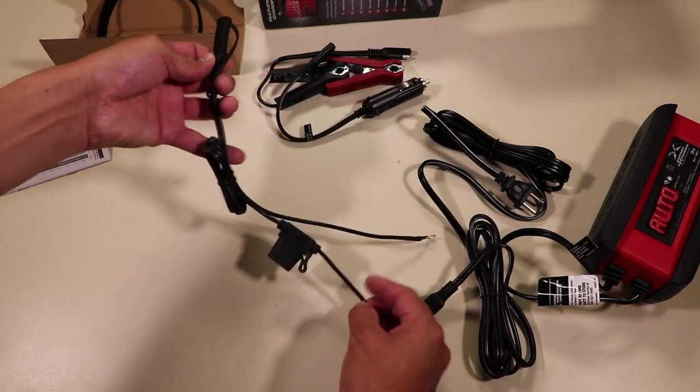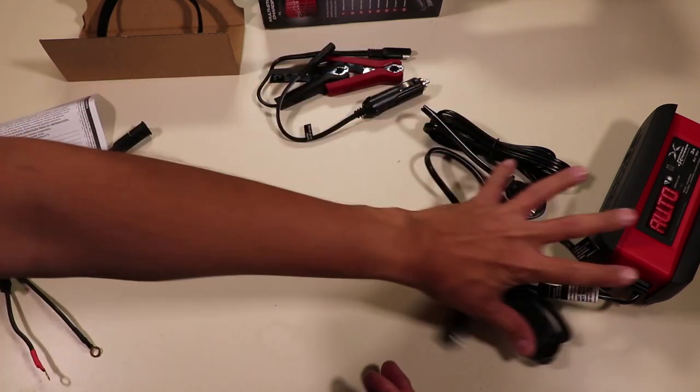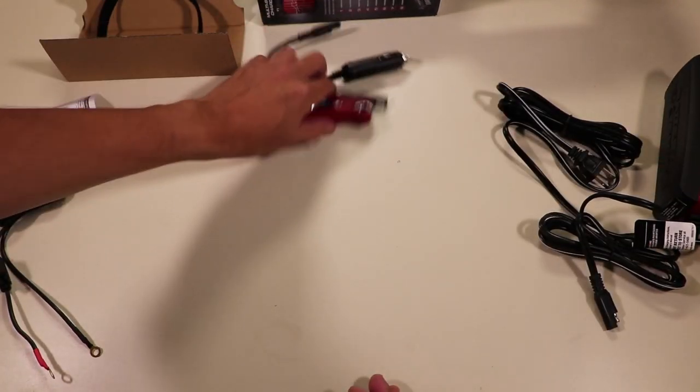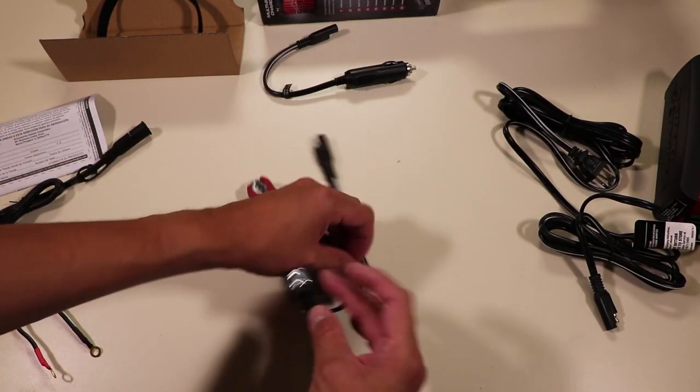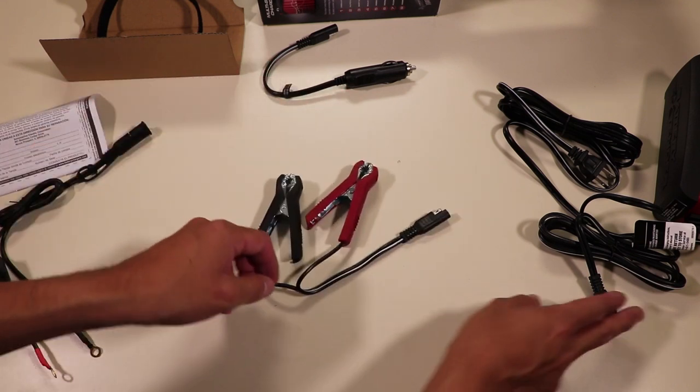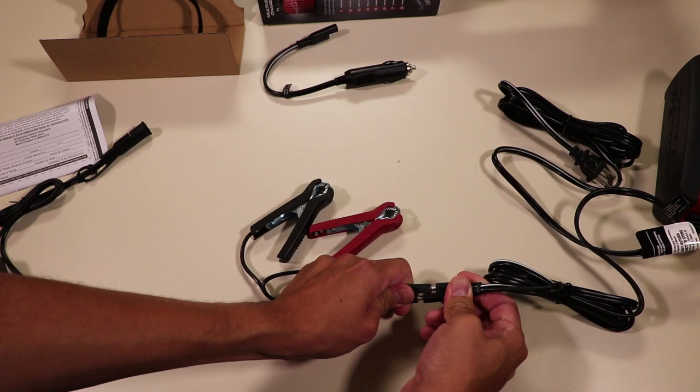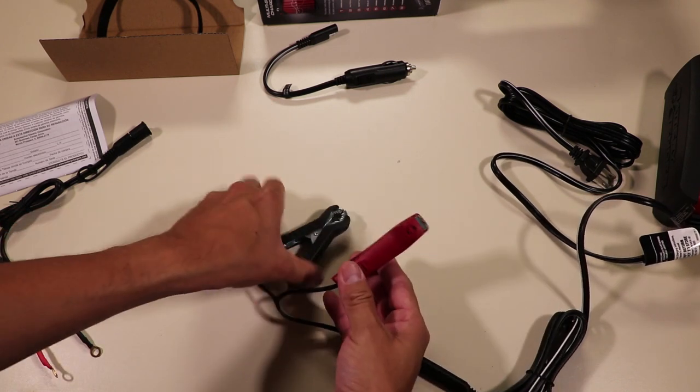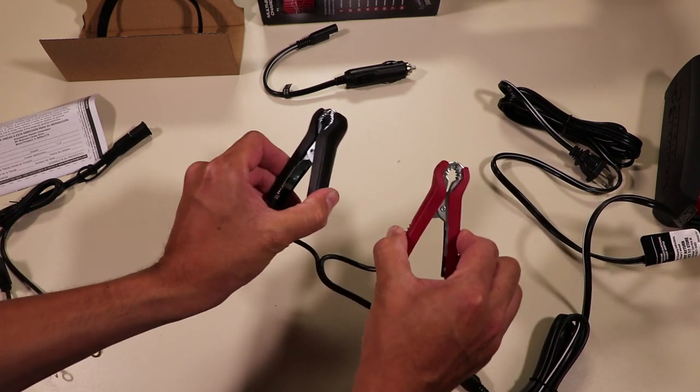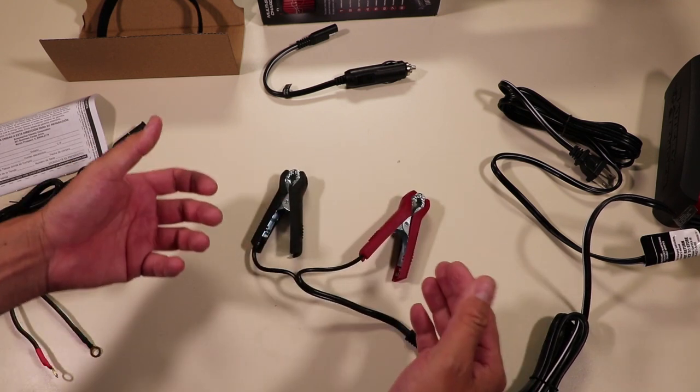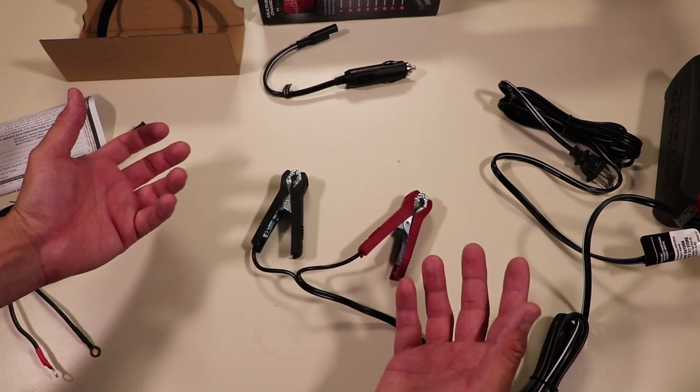The alternative way if you don't want to install this on your car would be to use these little alligator clips that they provide. The way that works is very simple. You would have this plugged into your battery maintainer and you would take the clips here, attach them to the battery post and leave the battery maintainer on the car as long as you want it to.